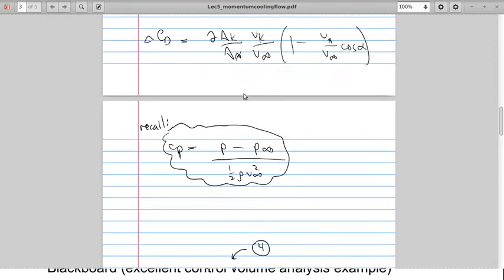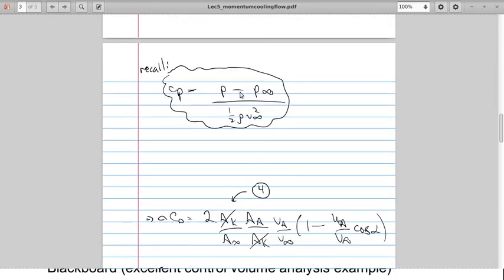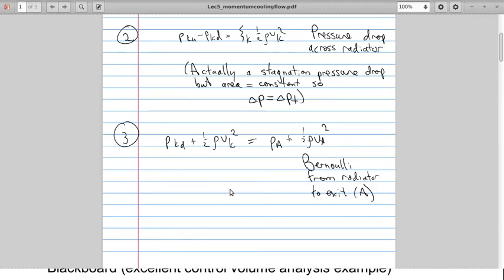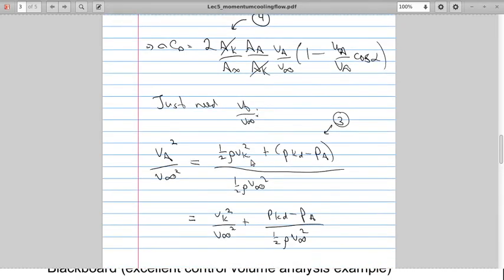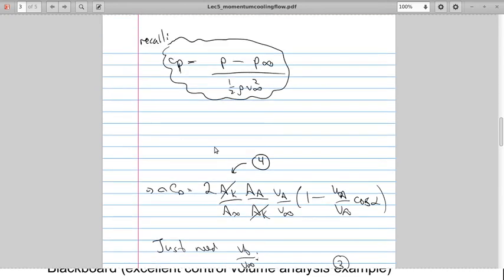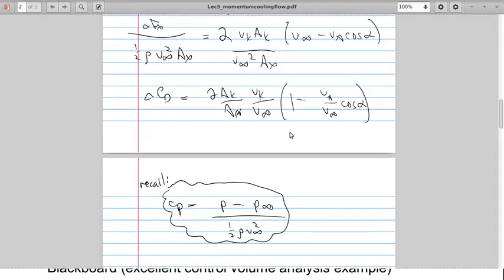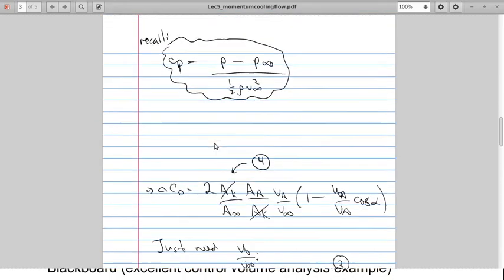Now our definition of pressure coefficient is Cp is P minus P infinity over one half rho V squared. And if we can use equation 4, this is equation 4 now so that delta CD here we've just introduced an extra term and cancelled things out so we've not changed the definition. And the reason is because we had a different reference area before.